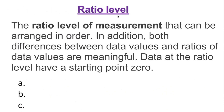The ratio level of measurement can be arranged in order; differences between data values are meaningful; and there is one extra property — a natural starting point of zero, where zero means there is no quantity. Looking back at interval: zero degrees Fahrenheit refers to 32 degrees below freezing, so that zero isn't truly zero. But in ratio level, zero means no quantity at all.